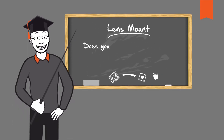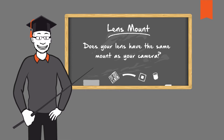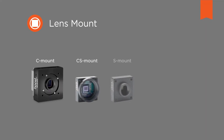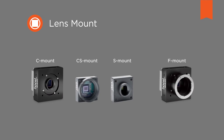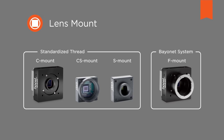Does your lens have the same mount as your camera? First of all, the lens has to fit on the camera, and for this you need the right mount. C, Cs, S and F mounts are common for industrial cameras. C, Cs and S mounts have a standardized thread. The F mount has a bayonet system, as you have already encountered with your SLR camera.